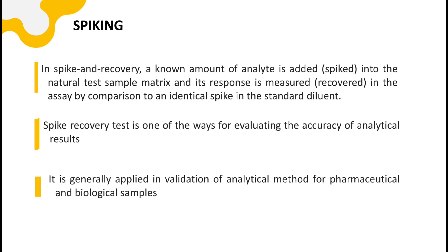So now let us see what is spiking. Spiking is also called as spike and recovery. A known amount of analyte is added into the natural test sample matrix. Whenever we purposefully add a known amount of analyte into any sample, it is called as spiking. Then its response is measured in the assay by comparison to an identical spike in the standard. Spike recovery test is one of the ways for evaluating the accuracy of an analytical method, and this is the reason we should know what it is.